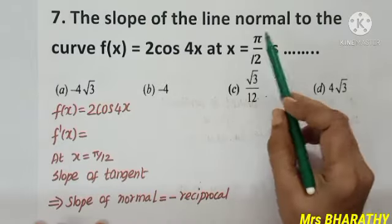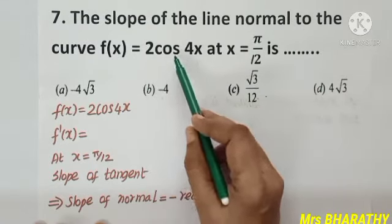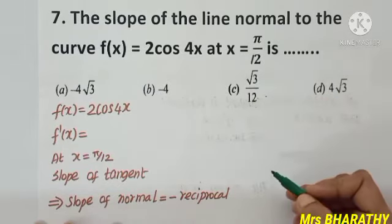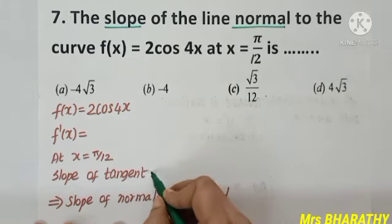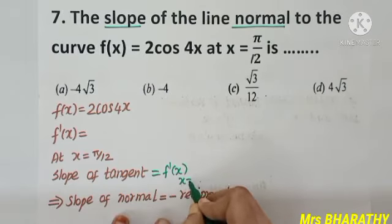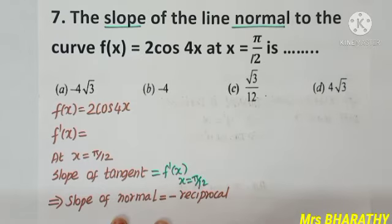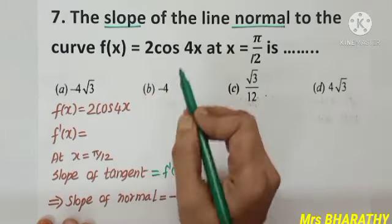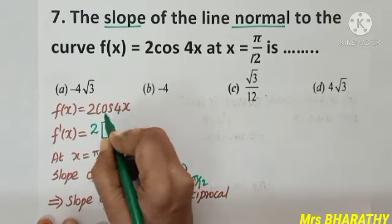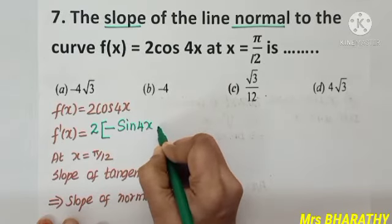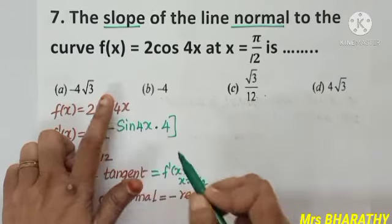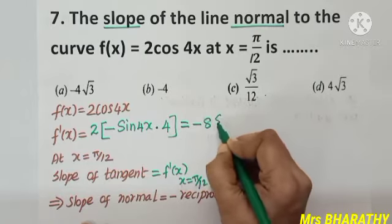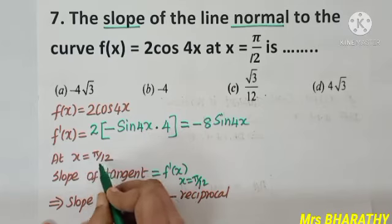Question number 7: the slope of the line normal to the curve f(x) = 2cos(4x) at x = π/12. Slope of tangent is f′(x) at that point. Slope of normal is the negative reciprocal. Differentiating: f′(x) = 2 · (−sin 4x) · 4 = −8 sin 4x. At x = π/12: f′(π/12) = −8 sin(4π/12) = −8 sin(π/3).